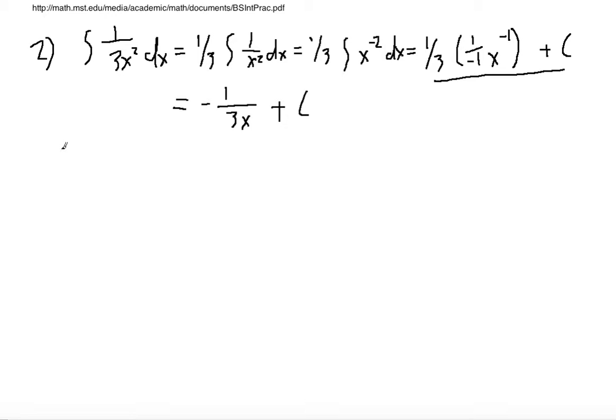Alright, let's see one that's been tricking a lot of people lately. This is number 3: t² times (t plus 2 over t) dt.